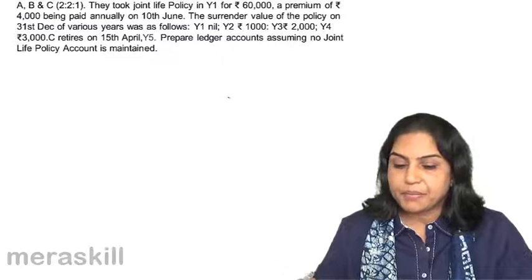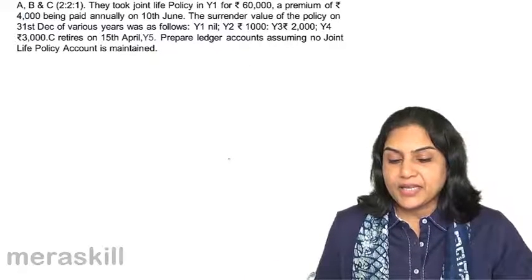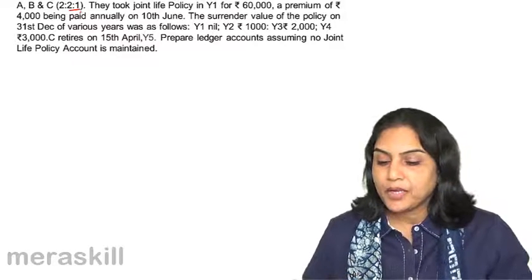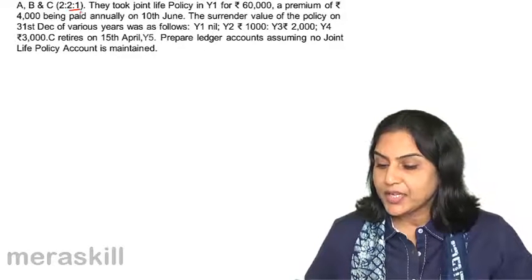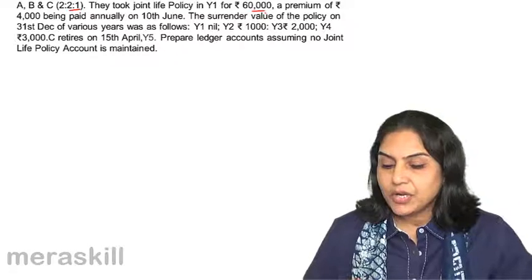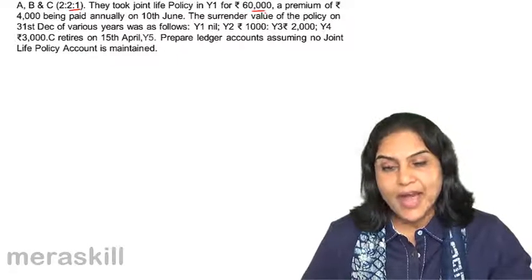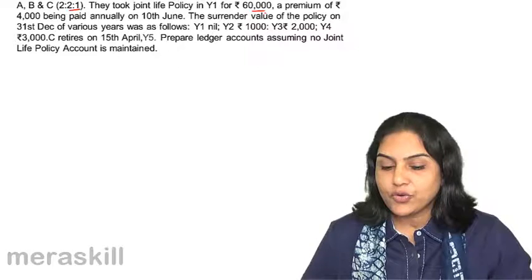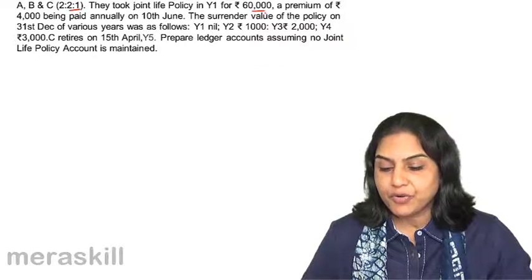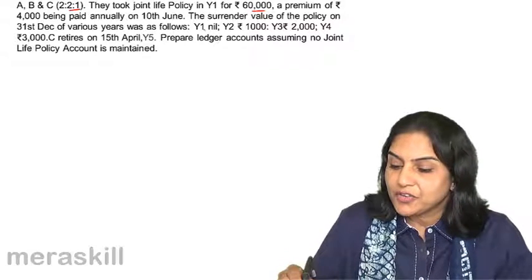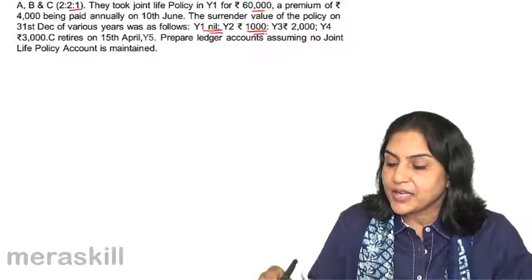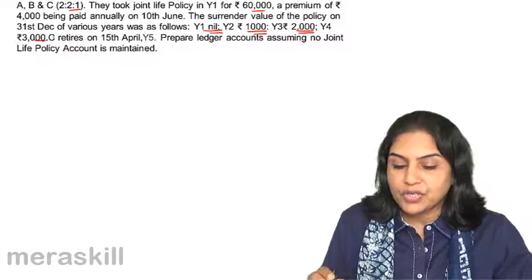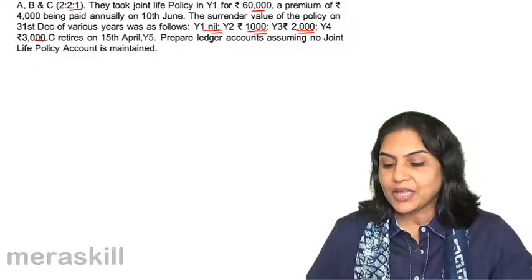Let us take an example. A, B, and C share profits and losses in the ratio 2:2:1. They take a joint life policy in year 1 for 60,000. A premium of 4,000 is paid annually on 10th June. The surrender value of the policy on 31st December of various years: year 1 — nil, year 2 — 1,000, year 3 — 2,000, year 4 — 3,000. C retires on 15th April.